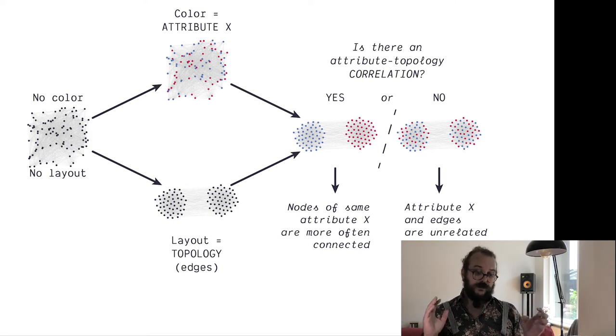Because remember, the layout, the position of the nodes translates the topology and the colors translate an attribute that will often be what we call a ground truth.